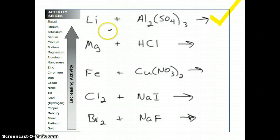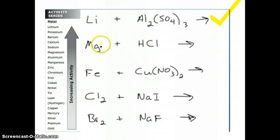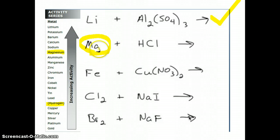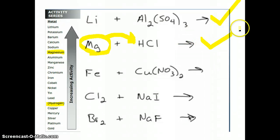Now let's take a look at our next example: magnesium and hydrogen. Hydrogen is not a metal, but we do put it in the activity series because it is a positive ion that can be replaced — that's why it's on the left-hand side of the periodic table even though it's a non-metal. Magnesium is highlighted in the activity series above hydrogen, so magnesium is the more active of the two. It will come in and replace this hydrogen, producing magnesium chloride and hydrogen gas. This reaction will happen.